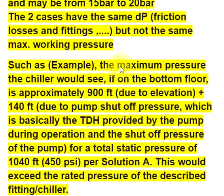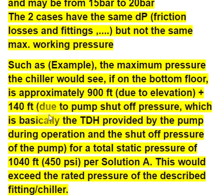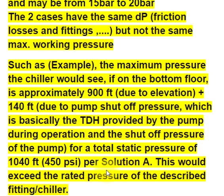For example, the maximum pressure the chiller would see if on the bottom floor is approximately 900 feet due to elevation, plus 140 feet due to pump shut-off pressure — which is basically the TDH provided by the pump during operation — for a total static pressure that would exceed the rated pressure of 1040 feet per solution A. This would exceed the rated pressure of the described fitting and chiller.